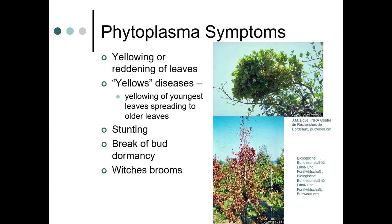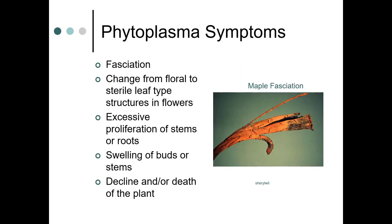Other symptoms include stunting, break of bud dormancy, witches' brooms, and fasciation. Here's a picture of maple with fasciation. You can also see a change from floral to sterile leaf-type structures in flowers, excessive proliferation of stems or roots, swelling of buds or stems, and decline or death of the plant.